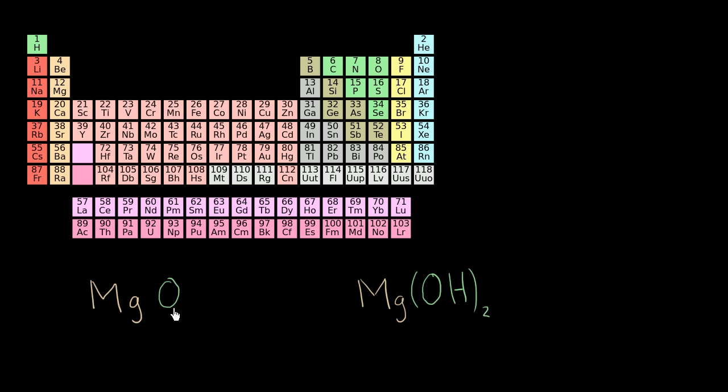So for example, here I have magnesium oxide (MgO), which is used in cement and has other applications. And this is magnesium hydroxide (Mg(OH)₂), which is actually used in antacids and deodorant.